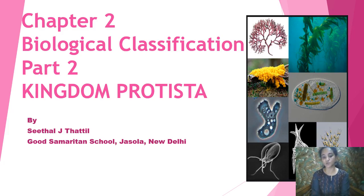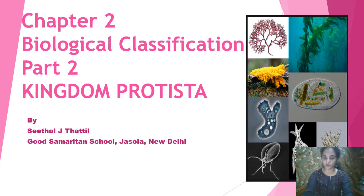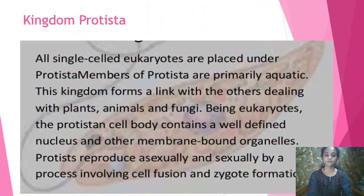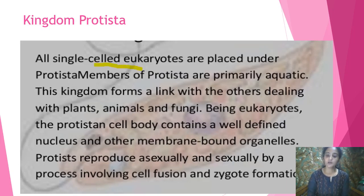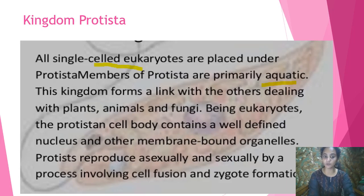Today's topic is Kingdom Protista. Let us see its general characteristics. They are single-celled but eukaryotic, and primarily aquatic. Remember, eukaryotic means they have evolved from prokaryotes to eukaryotes.